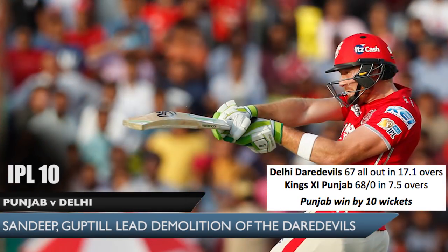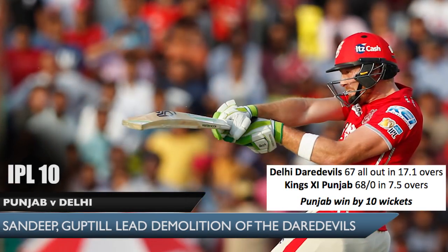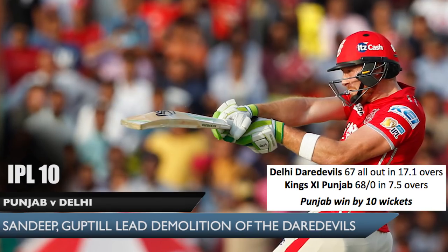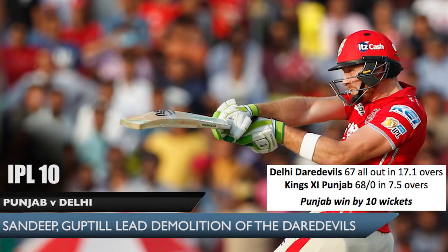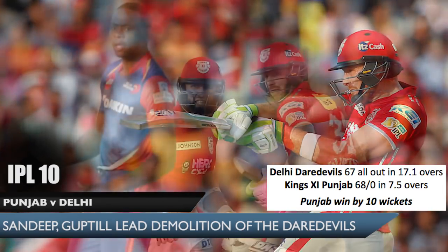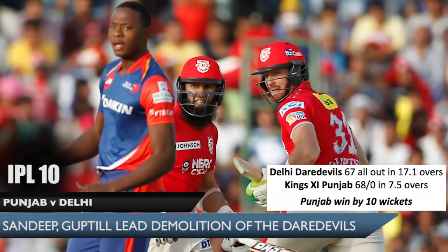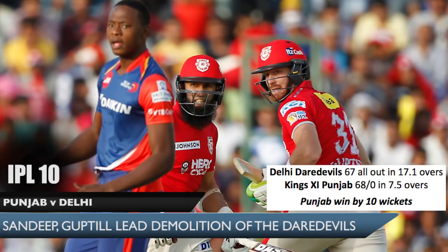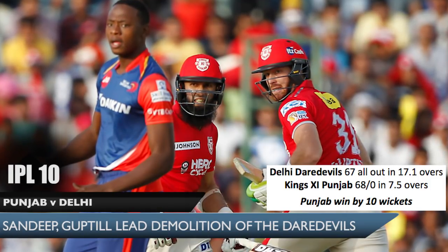Martin Guptill took off from the very beginning, slamming an unbeaten 50 from 27 balls. Guptill and Hashim Amla knocked off the runs in the small chase in just 7.5 overs.